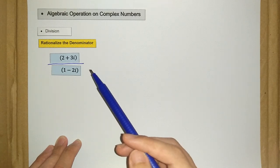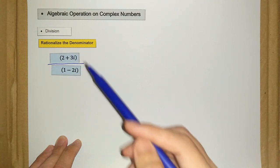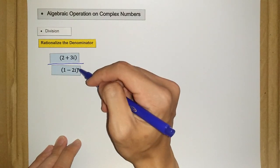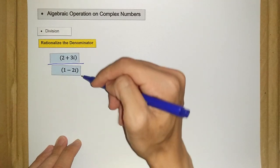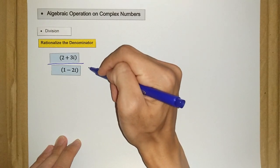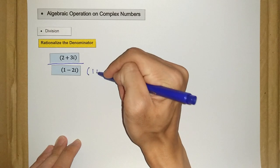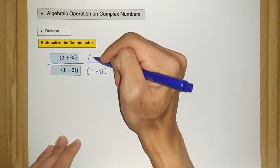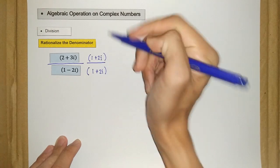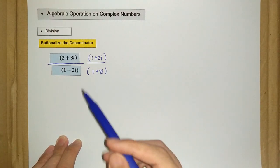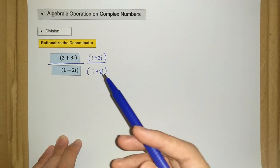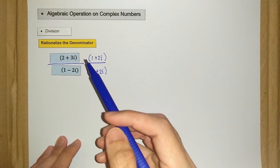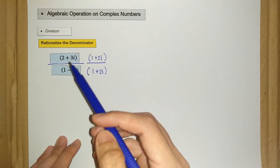We want to change this complex number into a real number without changing the overall value of the operation. So the first step is to identify the complex conjugate of the denominator. We have 1 minus 2i, therefore its complex conjugate is 1 plus 2i. We multiply the original number by this fraction — it's like multiplying by 1, so we don't change the value, just the form.